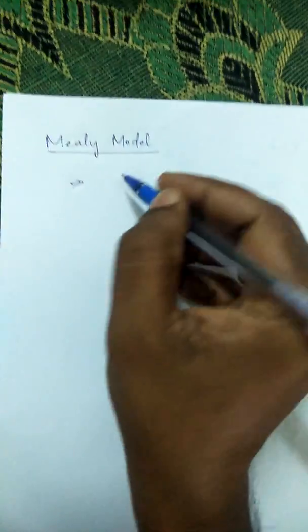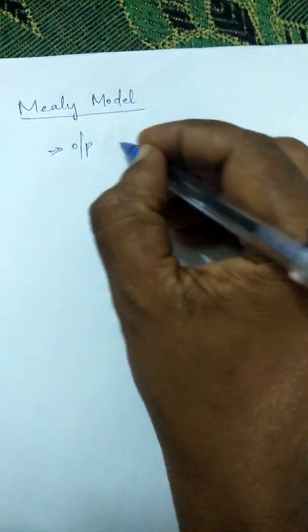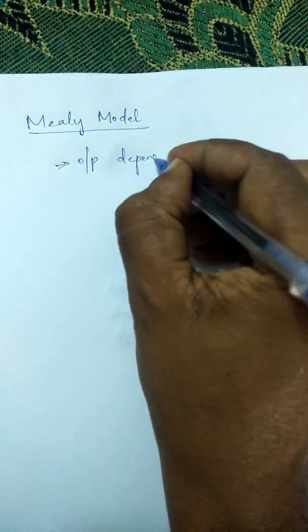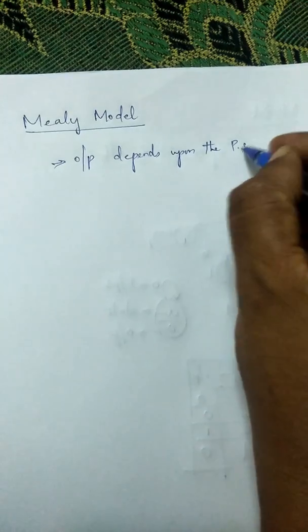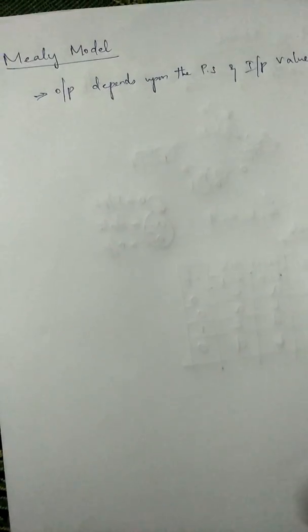Hello, good morning friends. Today we are going to discuss the Mealy model. In the Mealy model, the output depends upon the present state value and the input value. We'll see an example of a Mealy model state diagram.